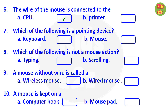Question number seven: which of the following is a pointing device? Answer is option B, mouse. Question number eight: which of the following is not a mouse action? Answer is option A, typing.